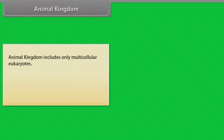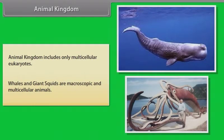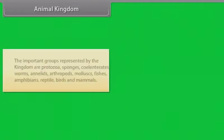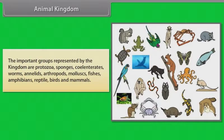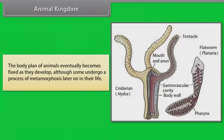The animal kingdom includes only multicellular eukaryotes. Whales and giant squids are macroscopic and multicellular animals. The important groups represented by the kingdom are protozoa, sponges, coelenterates, worms, annelids, arthropods, mollusks, fishes, amphibians, reptile, birds and mammals. The body plan of animals eventually becomes fixed as they develop, although some undergo a process of metamorphosis later on in their life.